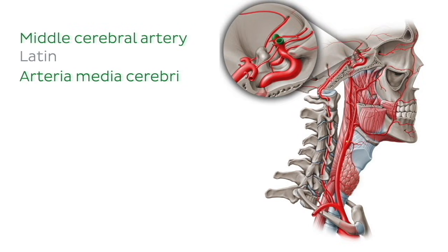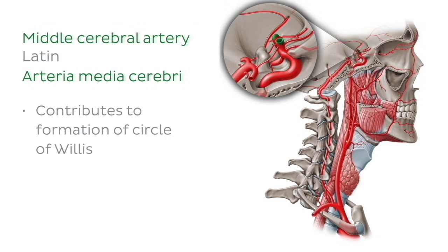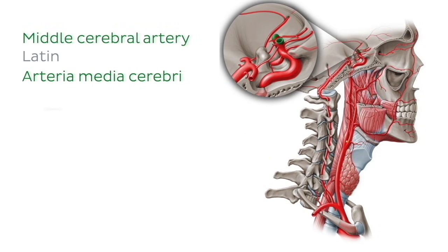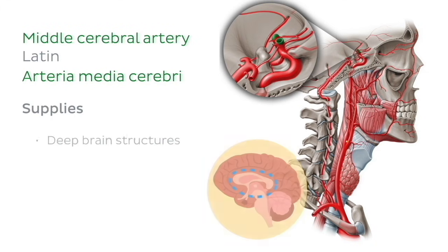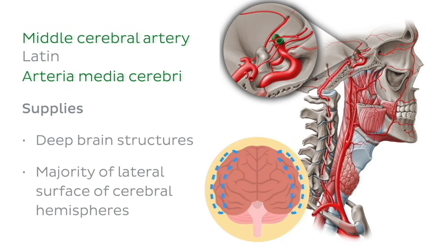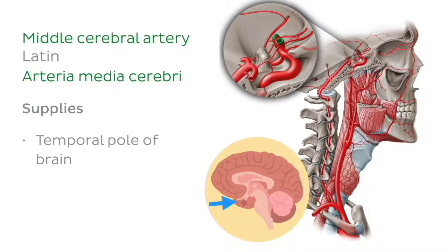The middle cerebral artery, also a contributor to the circle of Willis, is the second and largest terminal branch of the internal carotid artery. It supplies many deep brain structures, the majority of the lateral surface of the cerebral hemispheres, and the temporal pole of the brain.